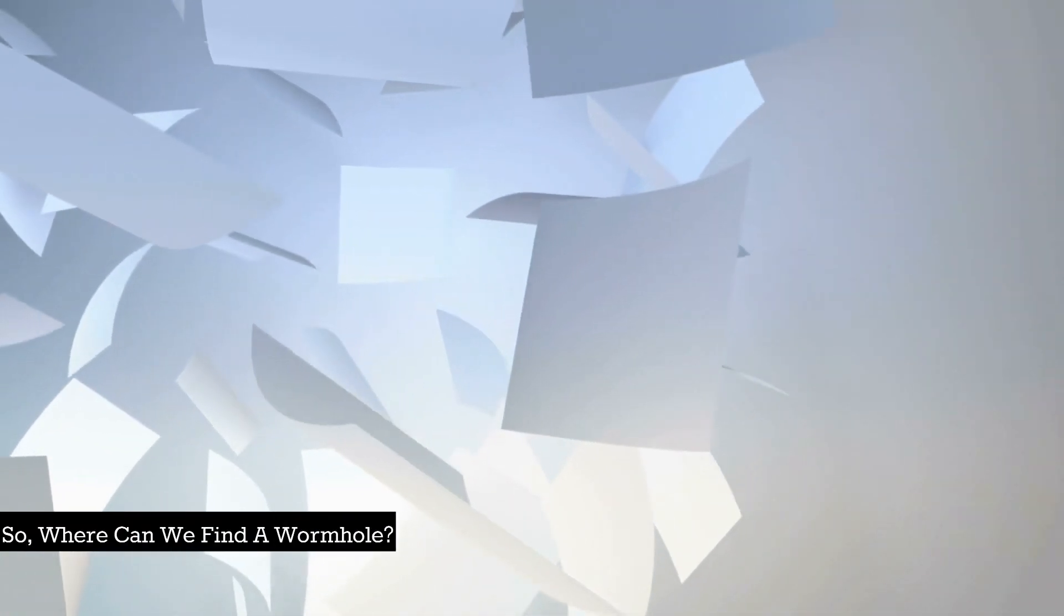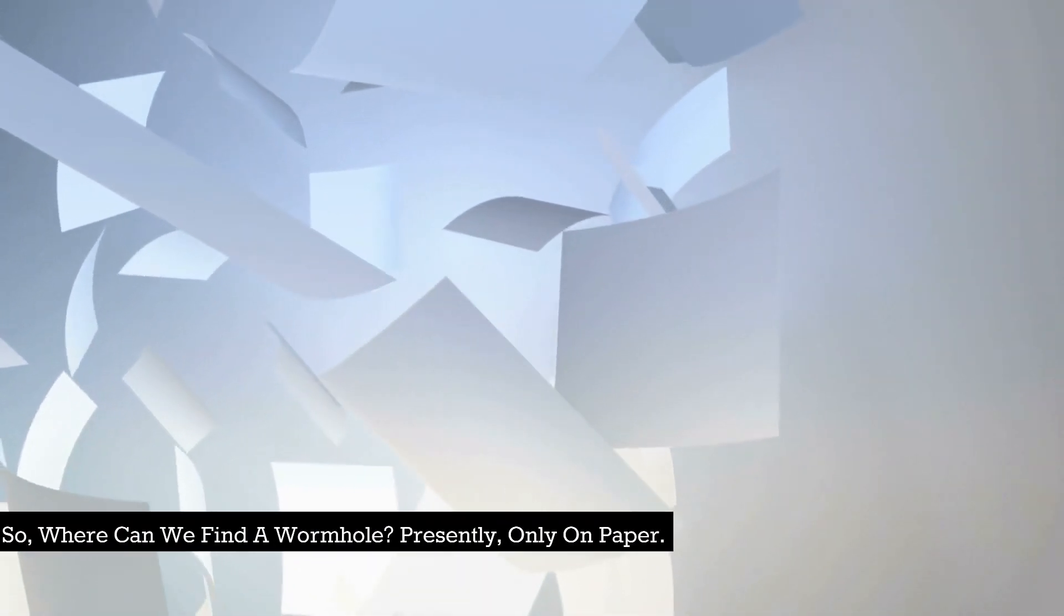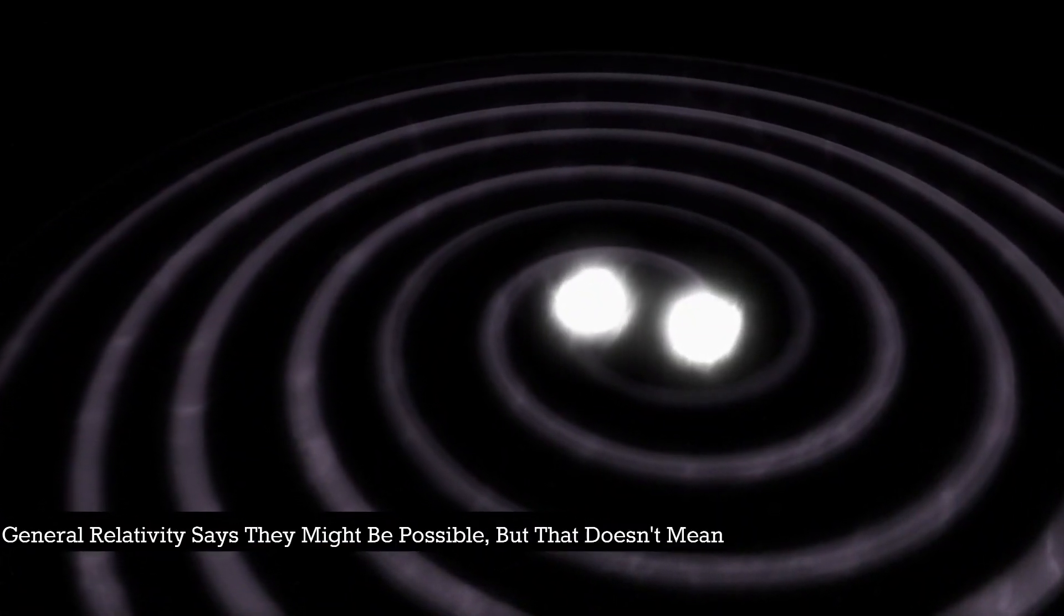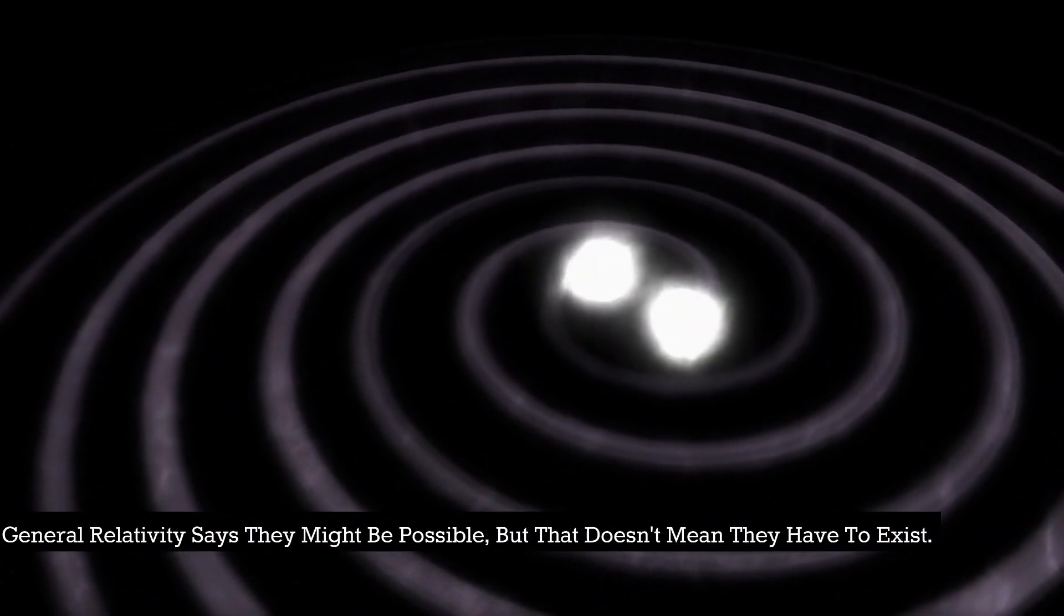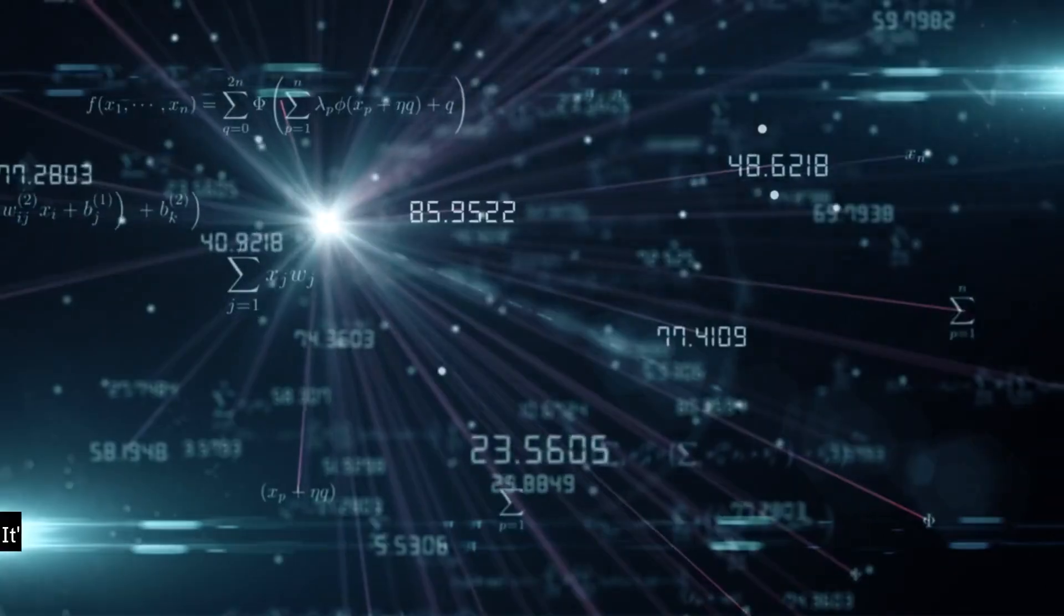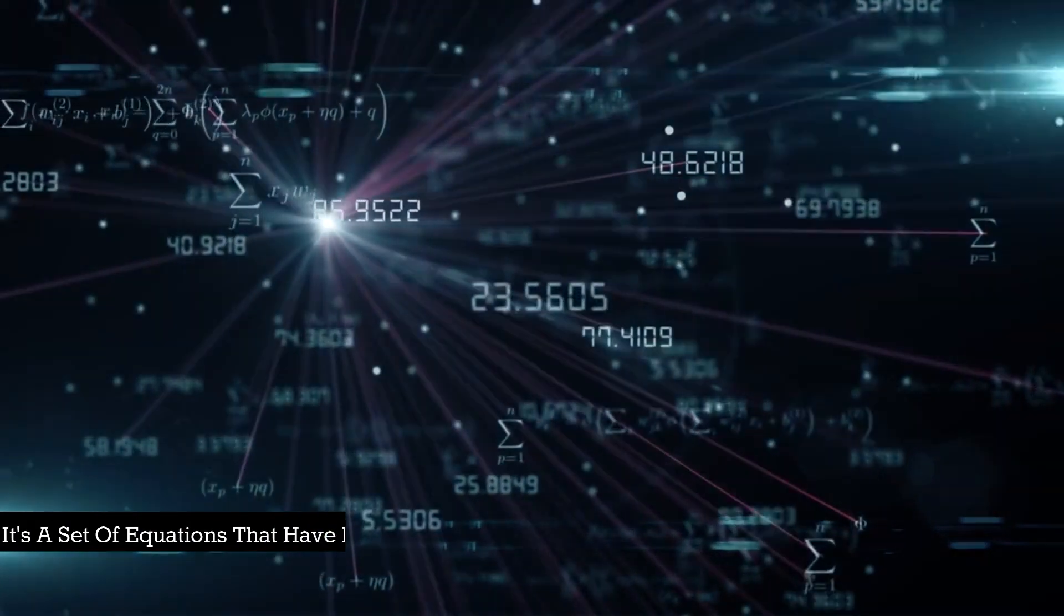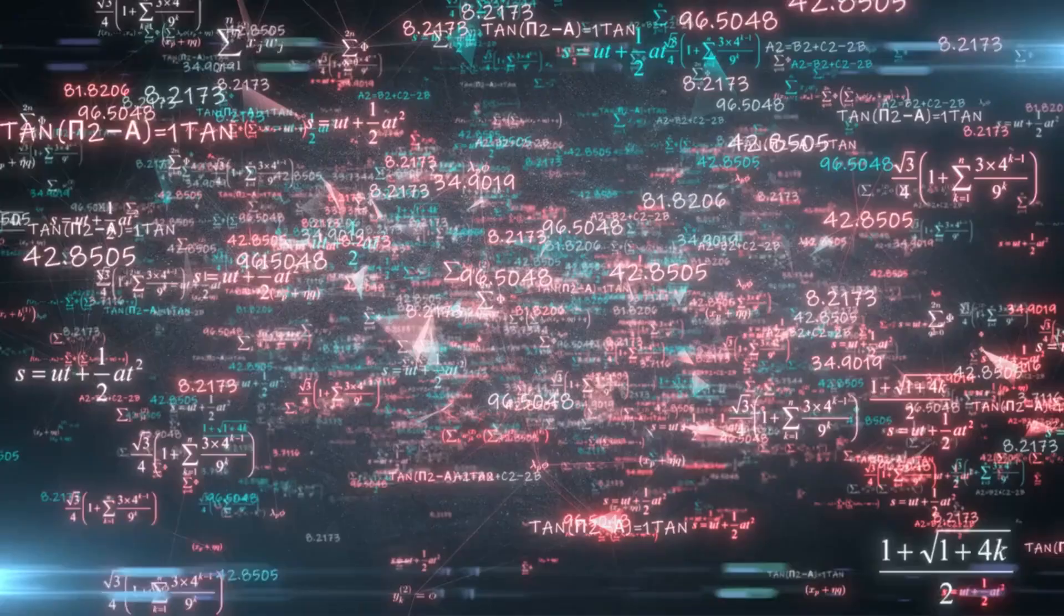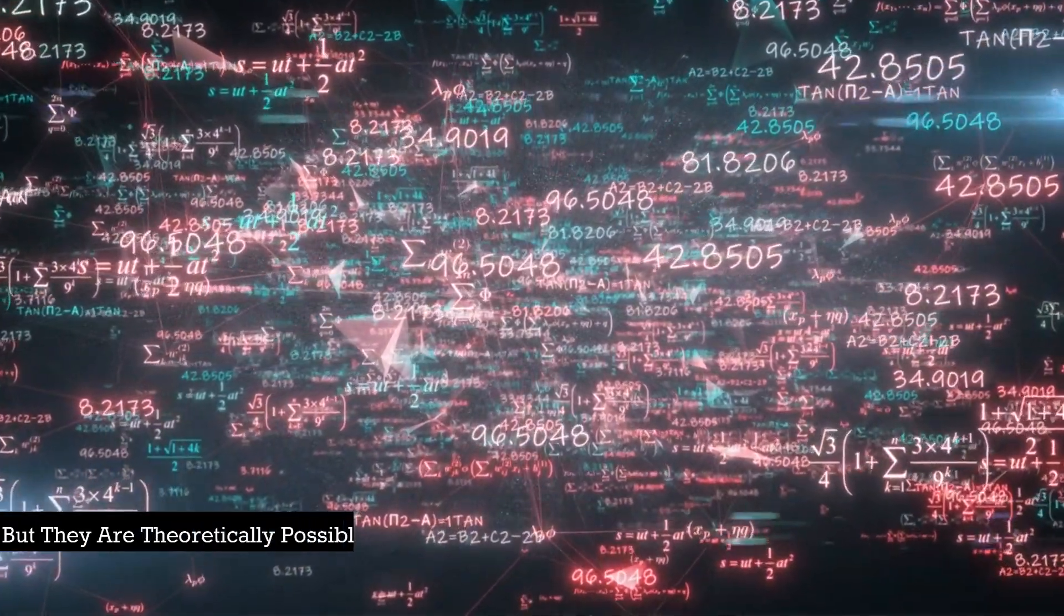So where can we find a wormhole? Presently, only on paper. General relativity says they might be possible, but that doesn't mean they have to exist. General relativity is a mathematical theory - it's a set of equations that have many possible answers, but not all maths describes reality. But they are theoretically possible, and there are different kinds.